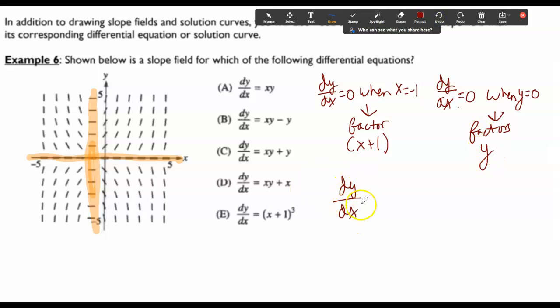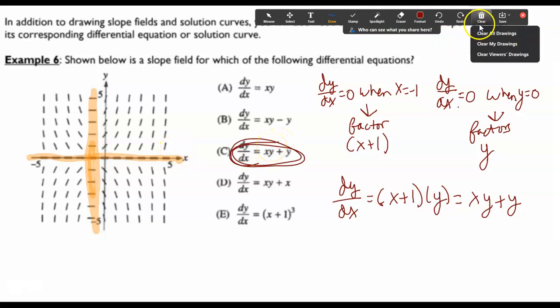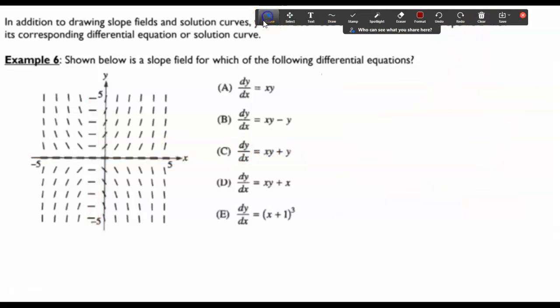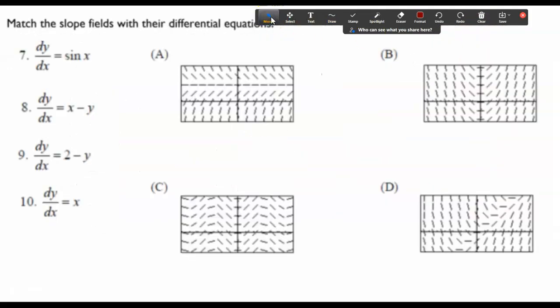So dy over dx equals x plus 1 times y. What you get is xy plus y. So my option c. So when things equal to 0 is really helpful, and we're going to see that continue to this next example.